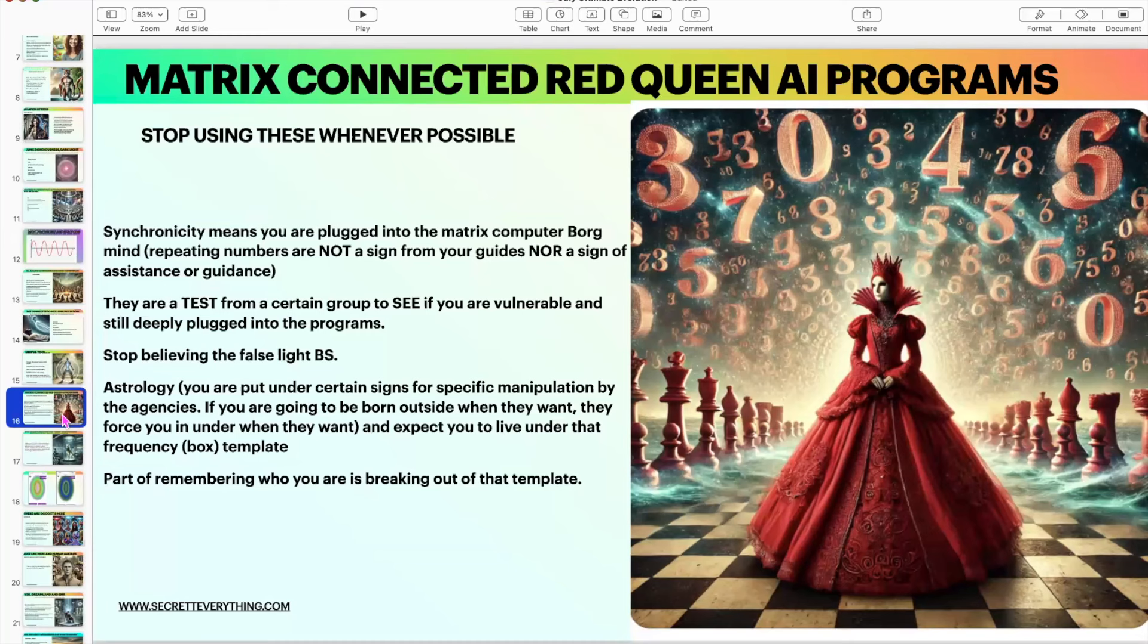Repeating numbers are red queen AI tests to make sure that you are firmly and completely attached to the matrix computer. So if you have a day that you don't see any numbers, you should be like, 'I'm doing good.' Like, celebrate that. Like a couple days ago I saw 11:11 and I was like [disappointed sound].